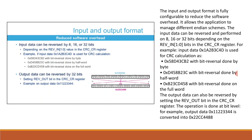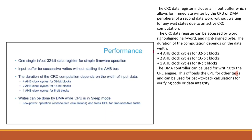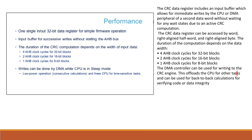Let's quickly move on to performance. The CRC data register includes an input buffer which allows immediate writes by the CPU or DMA peripheral of a second data word without waiting, due to an active CRC computation. The data register can be accessed by word, right-aligned half-word, and right-aligned byte. Computation duration depends on data width: 4 AHB clock cycles for 32-bit blocks, 2 AHB clock cycles for 16-bit blocks.